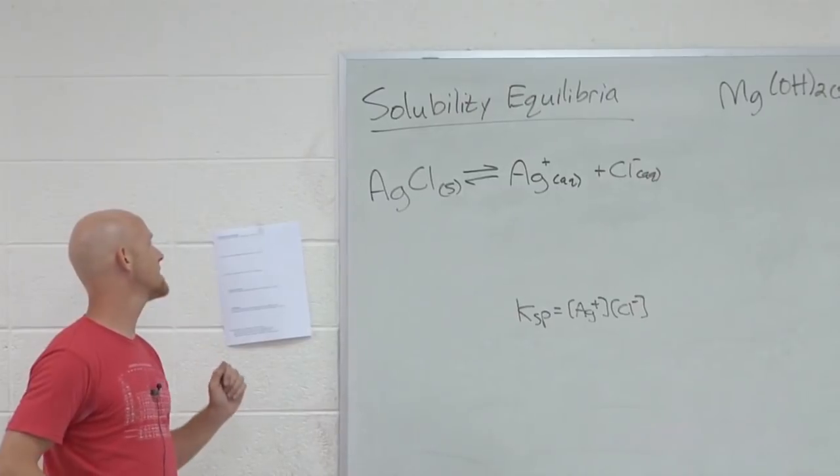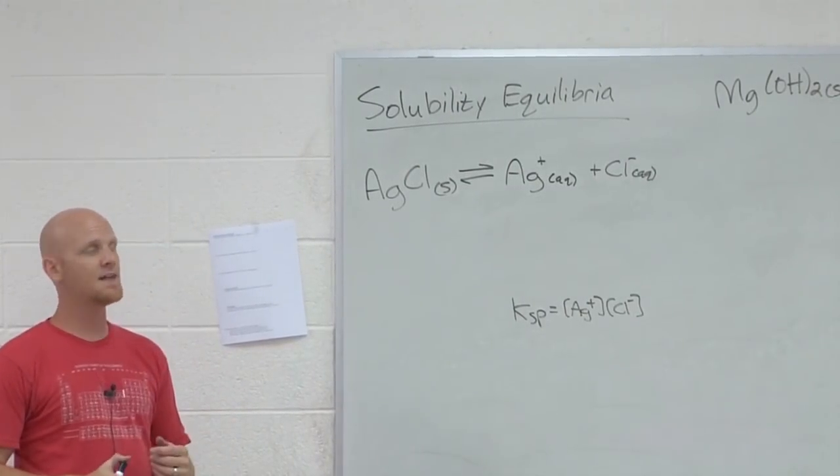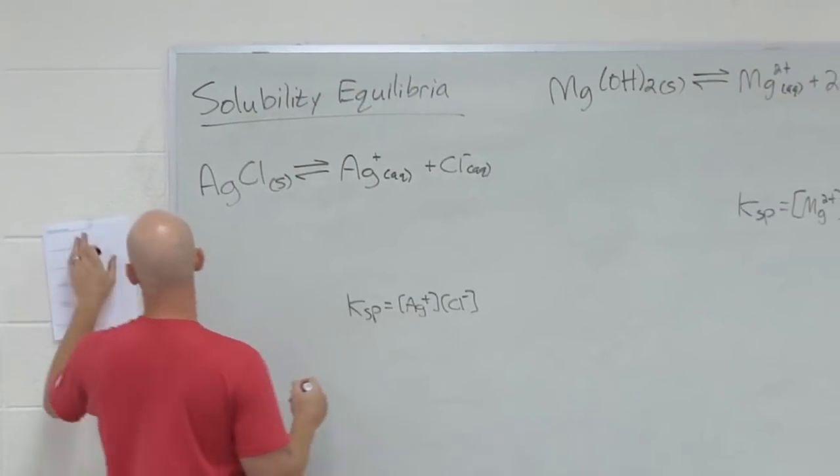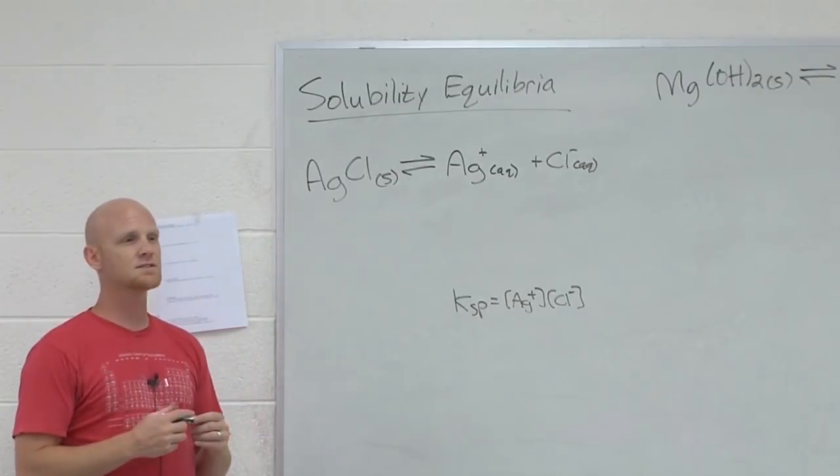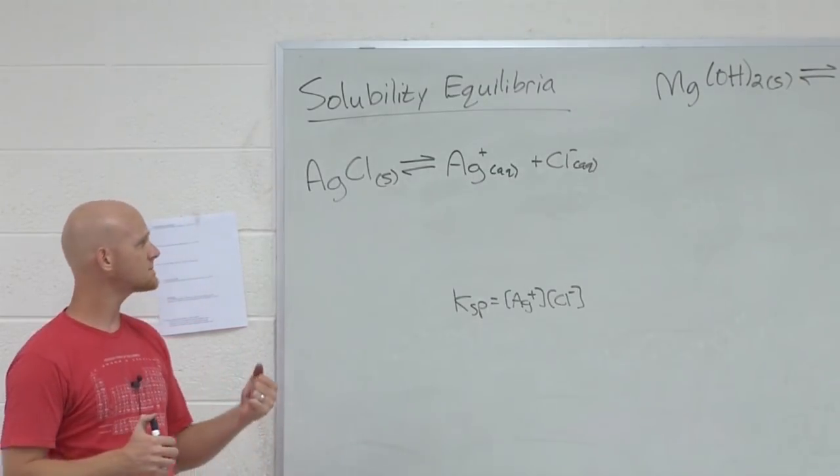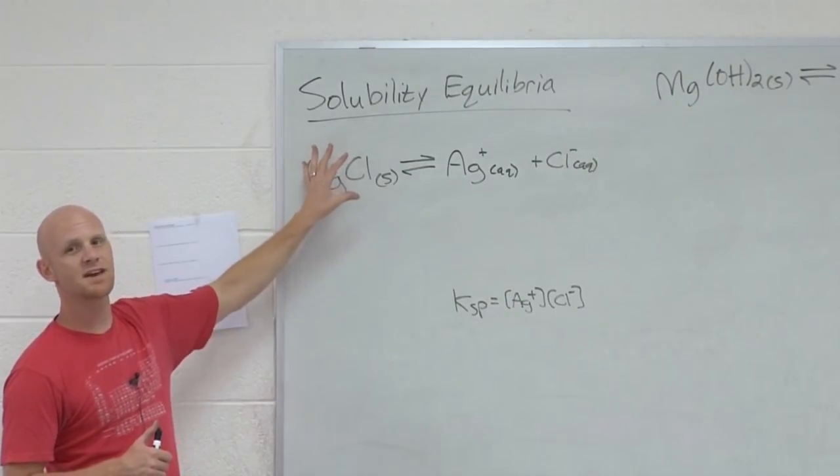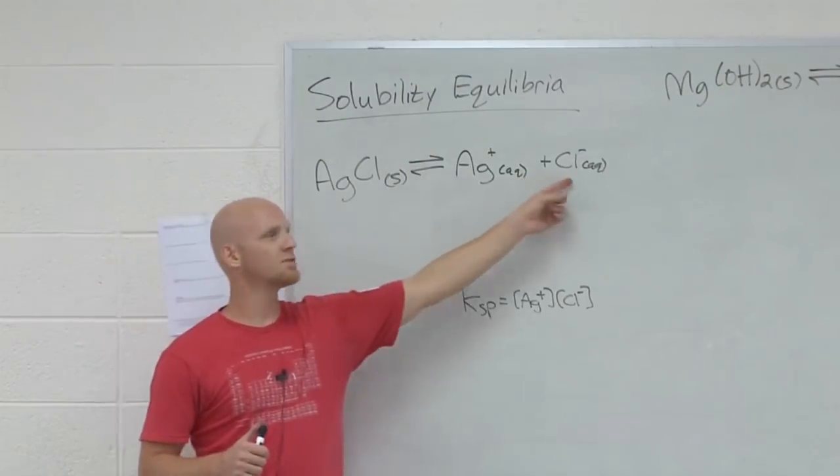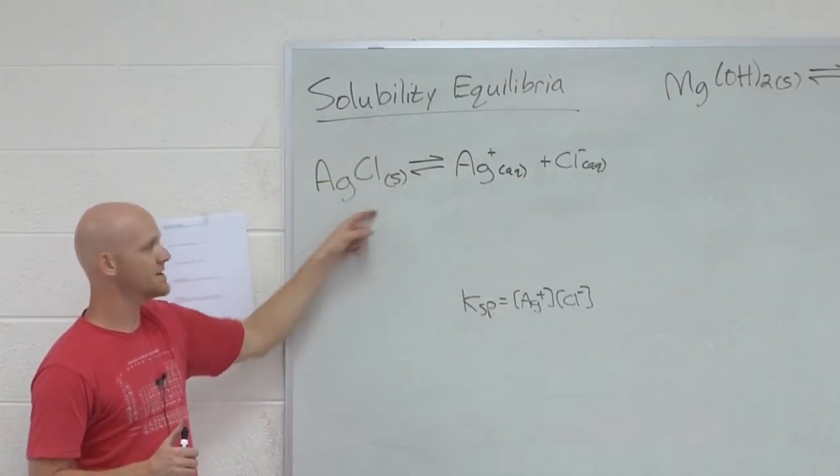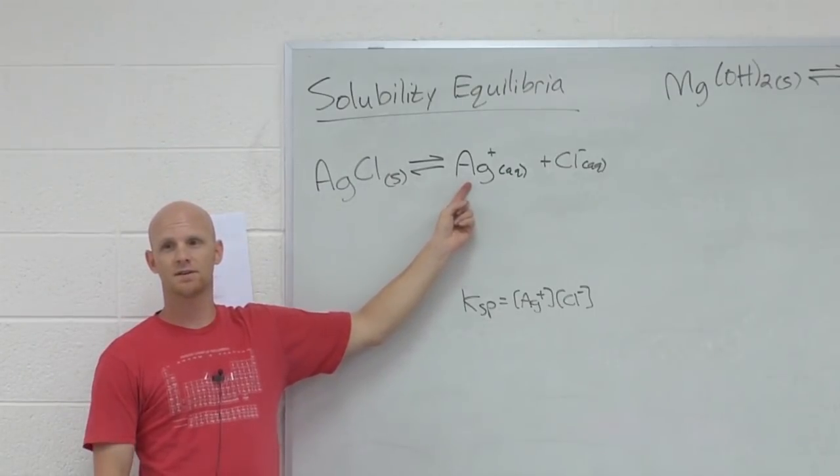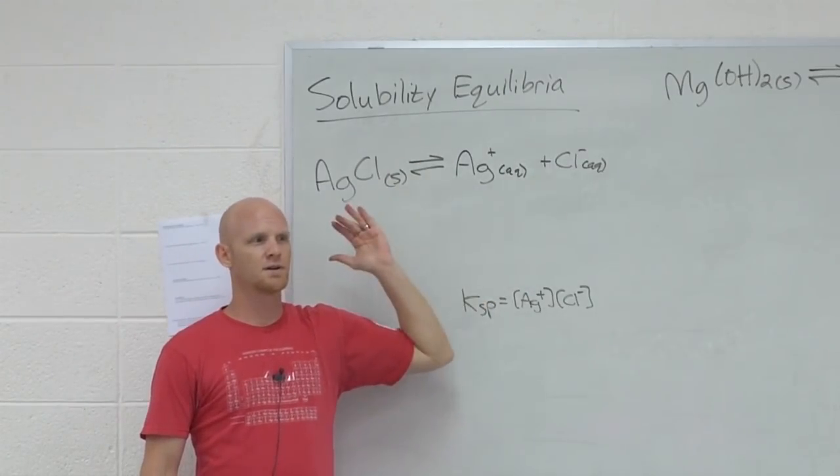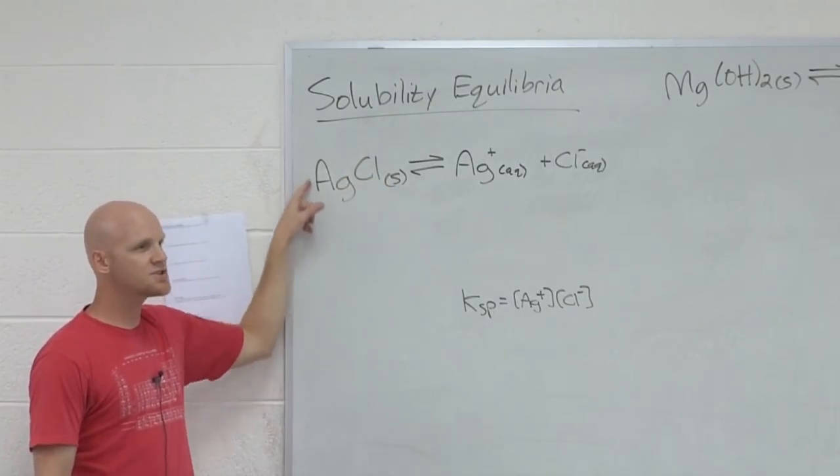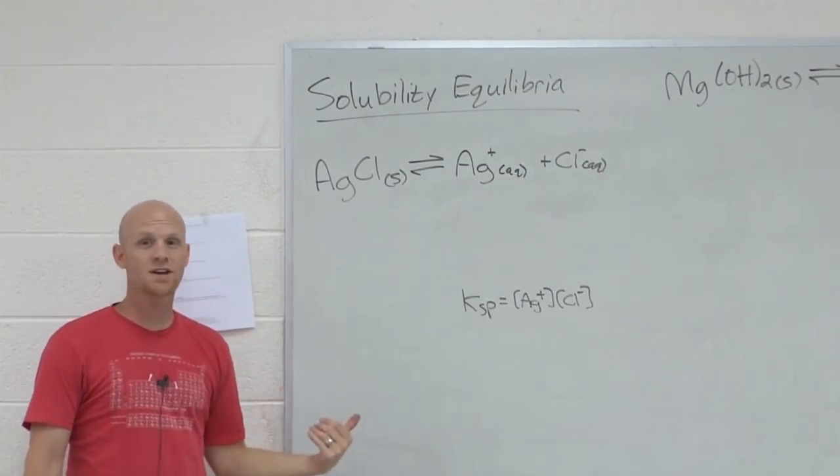A says, what is the molar solubility of AgCl? And then it gives you the Ksp in parentheses there. It tells you the Ksp is equal to 1.8 times 10 to the minus 10. Okay. It's asking for the molar solubility. Well, here's the deal. If I told you that 10 AgCl's dissociated, how many Ag's would you get? 10. How many Cl's would you get? 10. What if I told you that 100 AgCl's dissociated? How many silver ions would you get? 100. How many chlorides? 100. Cool. The thing is, I don't know how many of these dissociates.